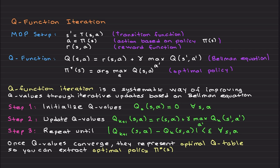Q-function iteration has three steps. Step one: we start with an initial guess for the Q-function. Typically this is done by setting the Q values to some arbitrary values — often zeros, sometimes randomized. Without loss of generality, I'm going to set it to zero for all s and a. So if you have five states and two actions, you'll have a five-by-two Q matrix, also called the Q table.